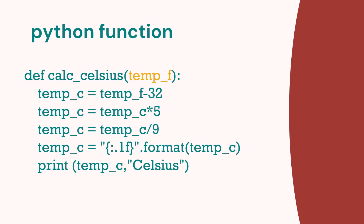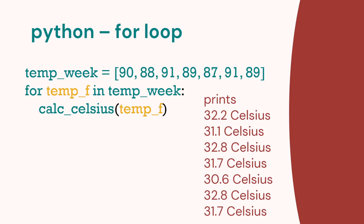We've highlighted the parameter temperature_f. There's an even better way to call it since we're calling it seven times — we can use a for loop. For each value in the week list, we call calc_celsius and that prints our output. So that's a lot less code than we started off with.